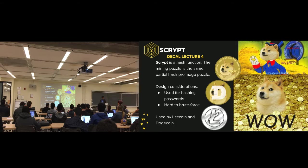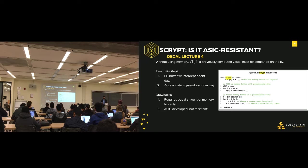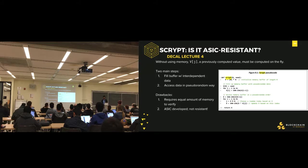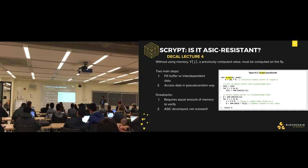Scrypt is a hash function used by Litecoin and Dogecoin — same partial hash pre-image puzzle but memory-hard. It has two stages: fill a buffer of size N with interdependent data, then access that data in a pseudo-random way. A random value from the array is accessed, requiring a lot of memory. The issue is that verifying a solution requires the same amount of memory, which goes against the tenet that verification should be easy. In addition, an ASIC was actually developed for Scrypt — meaning it's not truly ASIC-resistant.